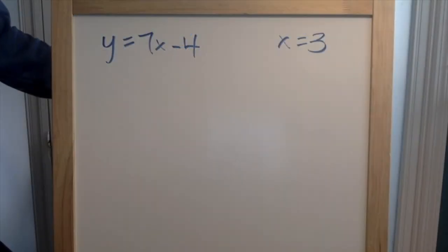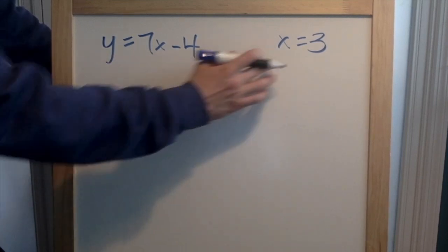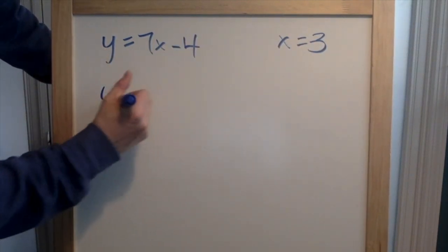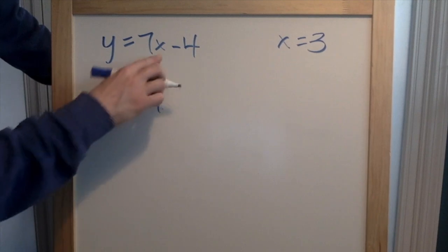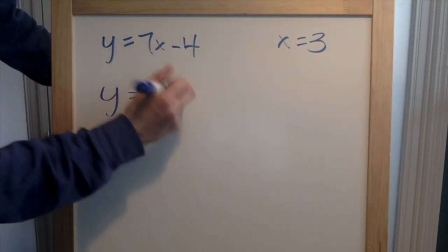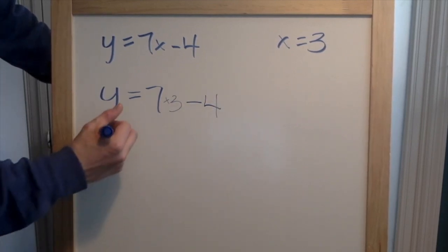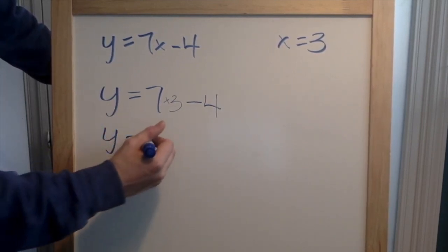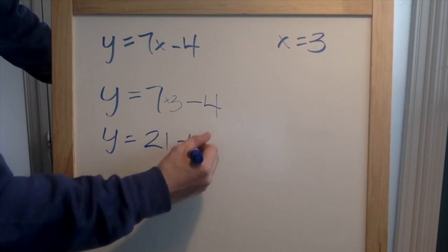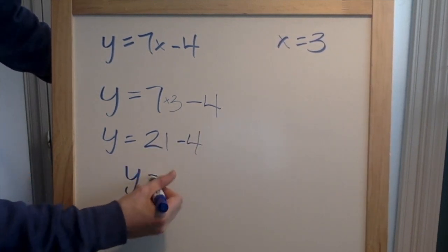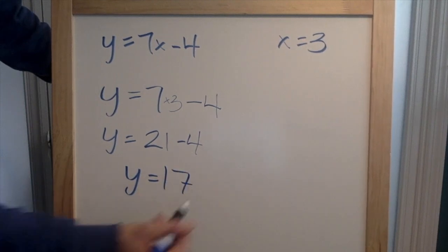Our next problem says Y equals seven X minus four. We know we need to solve for Y because X equals three. Y equals seven times three minus four. We know Y equals twenty-one minus four. When we solve twenty-one minus four, we find out that Y equals seventeen.